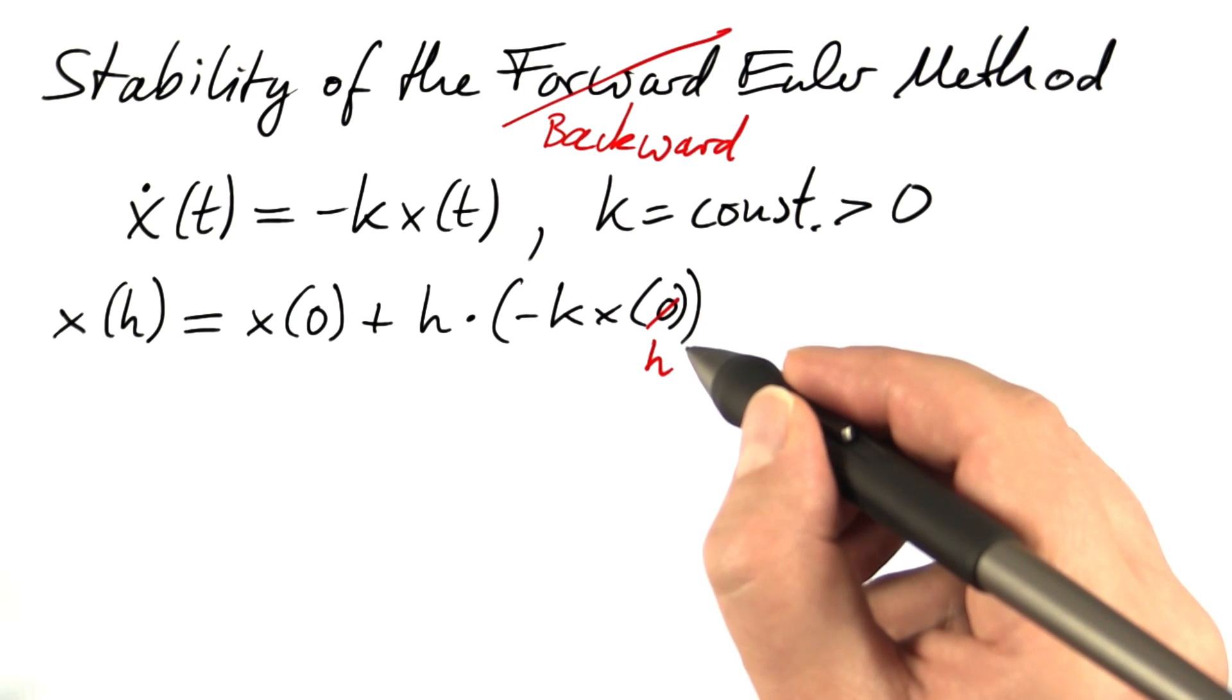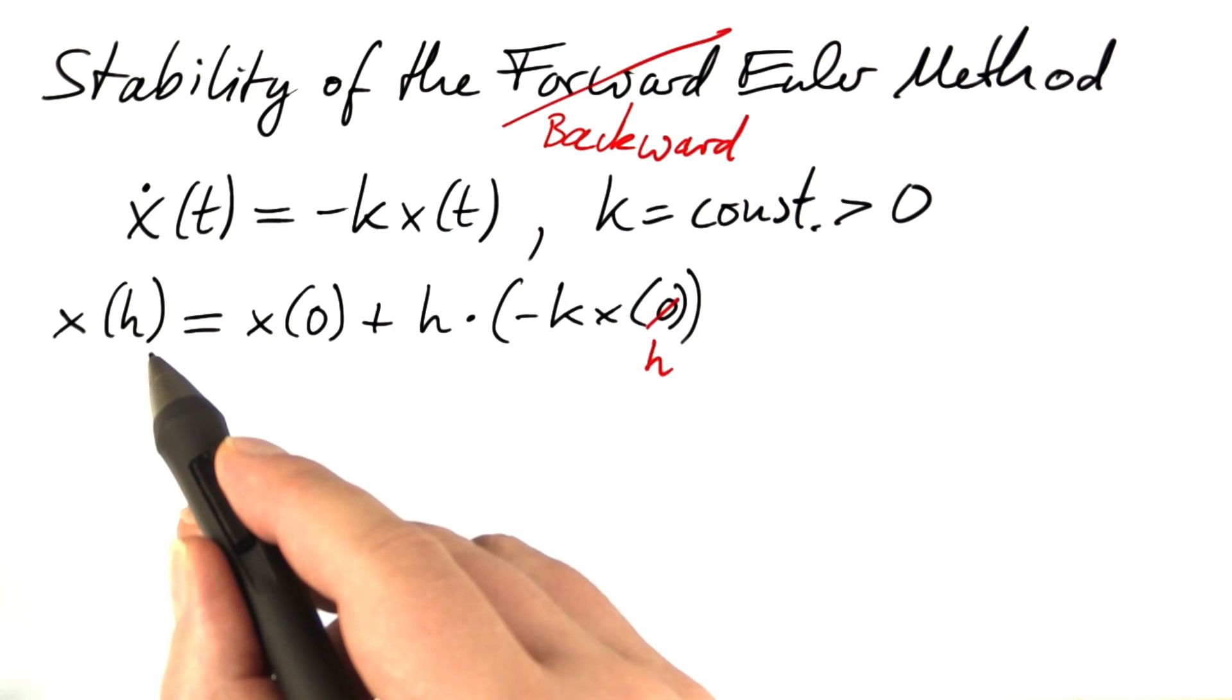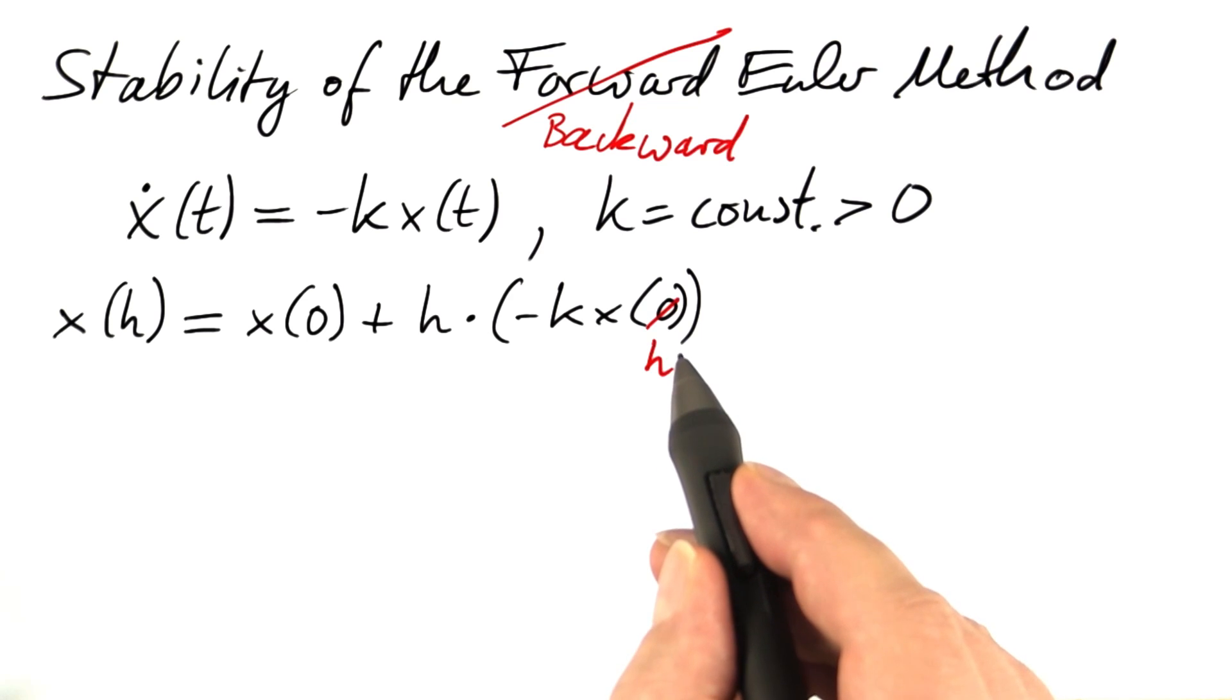Keep in mind that I'm writing x of h, but I'm referring to my estimates, the numerical solution, not the exact solution. This means that the value at the end of the first step appears on the left hand side and on the right hand side. This is why this is called an implicit method.